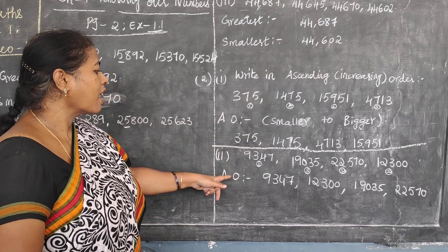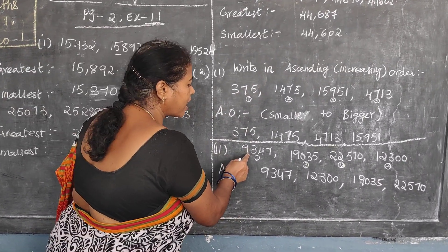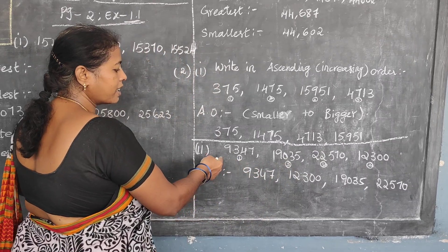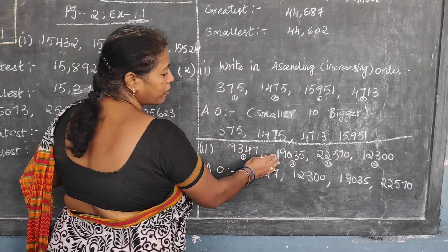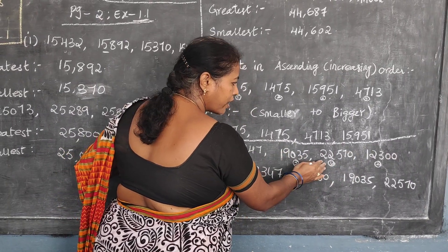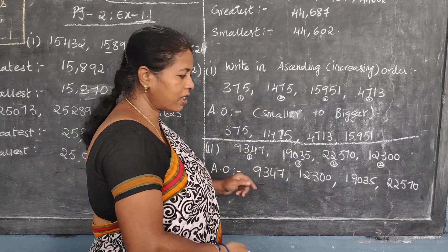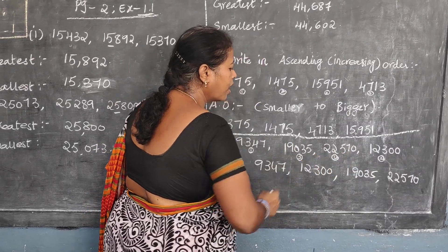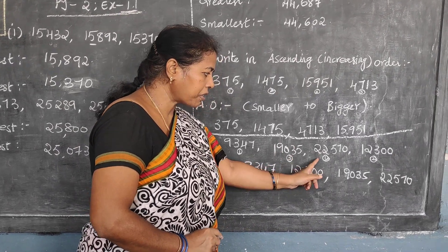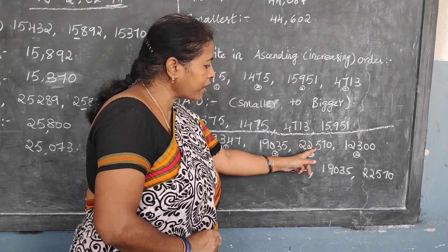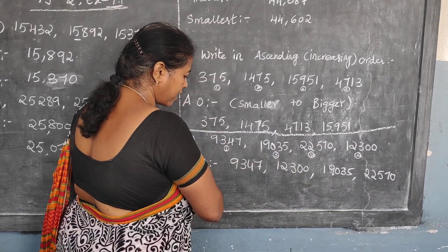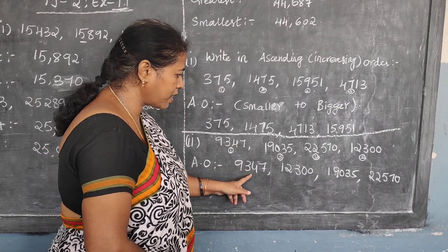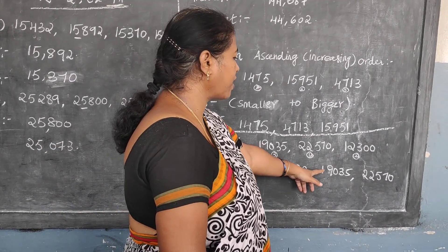Now first check which is the smaller number. We have 9000, 19000, 22000, 12000. So 9000 is smaller — mark it number one. Leave 9000 off. From the remaining three: 19000, 22000, 12000 — second is 12000. Then from 19000 and 22000, third is 19000. Fourth is 22570. So in ascending order: 9347 — 12300 — 19035 — 22570.